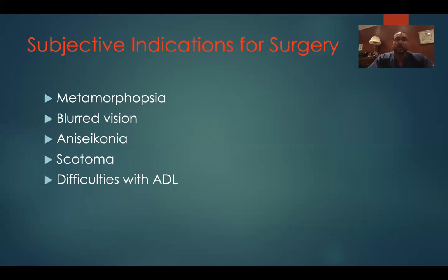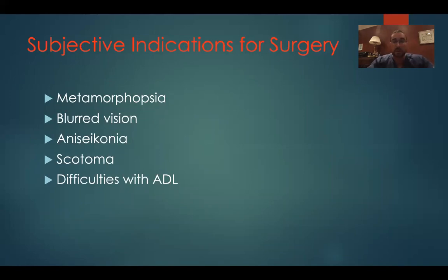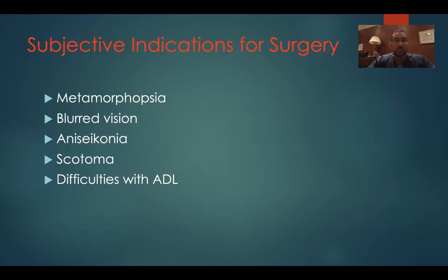What are the subjective indications for surgery for epiretinal membranes? Number one, metamorphopsia — a patient is having distorted vision. Blurred vision is another one. Anisoconia due to the macropsia. Central scotoma can result from this, as we saw on the Amsler Grid earlier. And difficulties with activities of daily living.